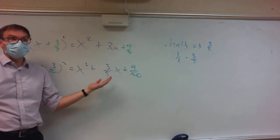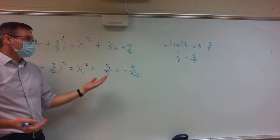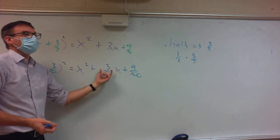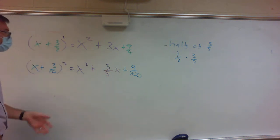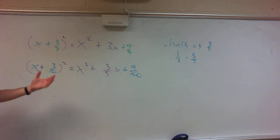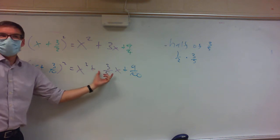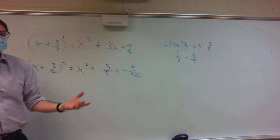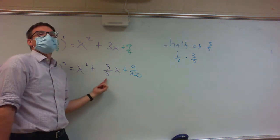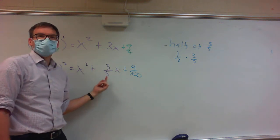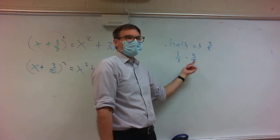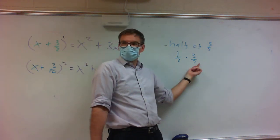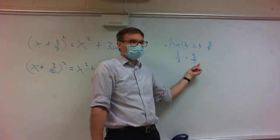This is as tricky as it gets. It doesn't get any trickier than when the number in front of x is a fraction, because you have to take half of that fraction. Here's the secret: you multiply the denominator by 2, because taking half of something means multiplying your denominator by 2.